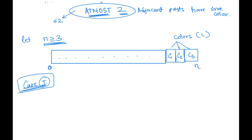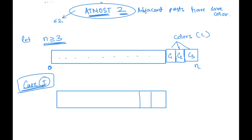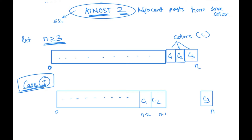We are going to use a little bit of permutations and combinations, but it will be quite basic. In case one, I'm going to separate the last post from the rest of the posts. The nth post is separated from the remaining, and we have n-1 and n-2 at the end of the remaining segment. The colors are c1, c2, c3, and this arrangement is nothing but dp[n-1] — the number of ways we can arrange the colors satisfying the criteria for n-1 posts.